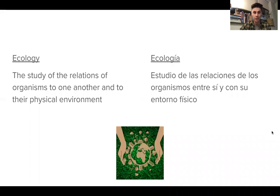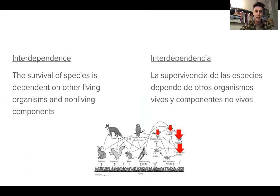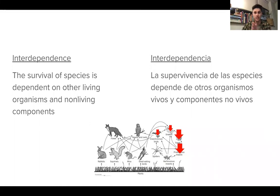First we have ecology. Ecology is the study of relations of organisms to one another and to their physical environment. In other words, how do living and non-living things interact? Interdependence: the survival of species is dependent on other living organisms and non-living components. This is connected to ecology — it's just a word explaining that everything is connected. The living things, the non-living things, there are complex relationships between all of them.